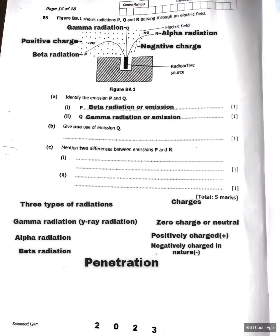Question B asks for one use of emission Q. Since Q is gamma radiation, gamma radiation is used in the treatment of cancer cells because of its high penetration.